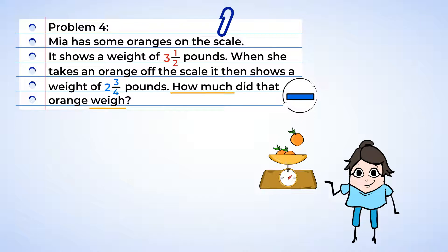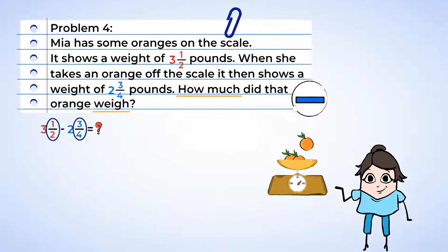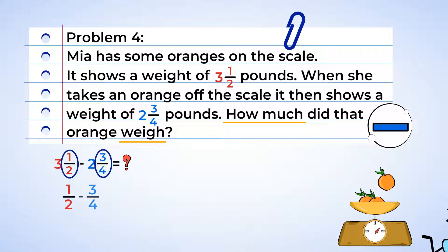Well, we need to use subtraction to find the weight of the orange that was removed. We can do this. 3½ minus 2¾. Let's take a closer look at those fractions. ½ minus ¾. We can change ½ to have a denominator of 4 by multiplying by 2. 1 times 2 is 2, and 2 times 2 is 4. And now we have 2/4 minus ¾, or 2 minus 3.